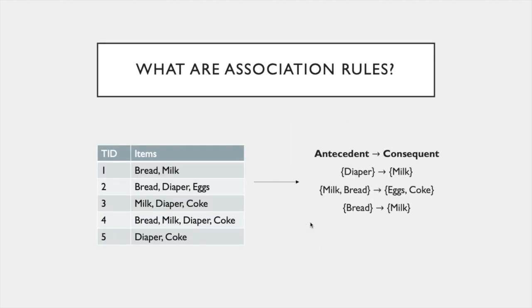Now let's formally understand association rules. Say you have a set of transactions where a transaction ID gives a unique identity to each transaction, and for each transaction you have a set of items purchased. For example, one customer purchased bread and milk, another purchased bread, diaper, and eggs. In reality there could be thousands or even millions of such transactions, and from this transactional data we obtain association rules.